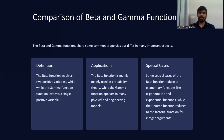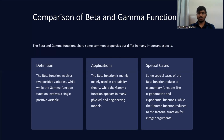Now let's compare both the beta and gamma functions. They share some common properties but differ in important aspects. In terms of definition, the beta function involves two positive variables, while the gamma function involves a single positive variable. In terms of applications, the beta function is mainly used in probability theory, while the gamma function appears in many physical and engineering models. In special cases, the beta function reduces to elementary functions like trigonometric and exponential functions, while the gamma function reduces to factorial functions for integer arguments.